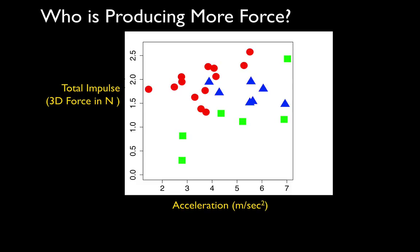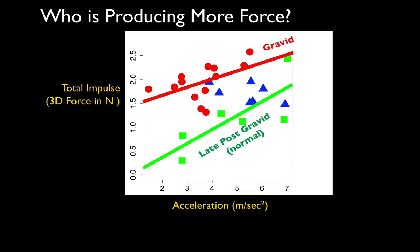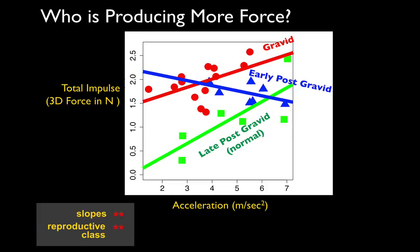We did an experiment where we measured force production in pregnant or gravid iguanas. We wanted to know who produced more force: those that had recovered from reproduction, or those that were fully gravid. The fully gravid ones produced way more force. But what was really weird and surprising was a pattern we found with early post-gravid individuals — right after they laid their eggs, they seemed to have trouble generating force. More force produced didn't result in greater acceleration, which was really strange, pointing to the possibility that perhaps they were too stretched out to actually be effective.